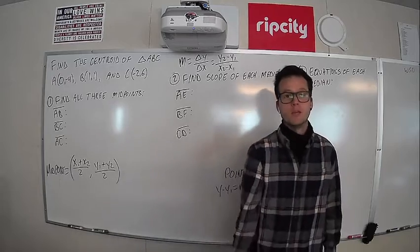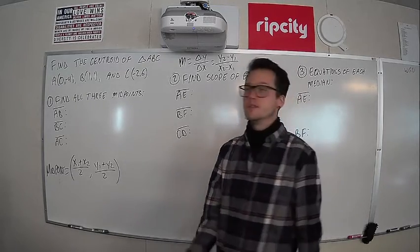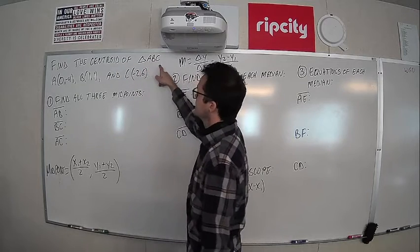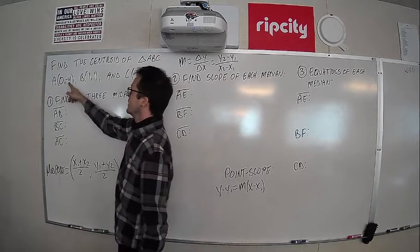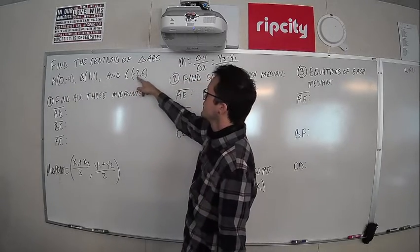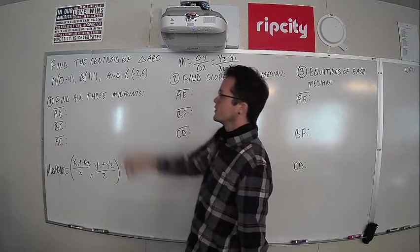Okay, team, here's our big hefty example like we did with altitudes and orthocenters. So our task here, find the centroid of triangle A, B, C, where A is at the point 0, negative 4, B is at the point 1, 1, and C is at the point negative 2, comma 6. So I've laid out three of the steps. First, we're going to find the three midpoints of all three sides.